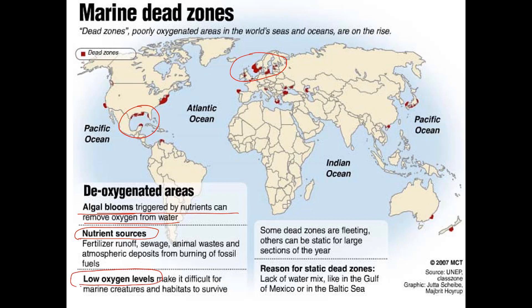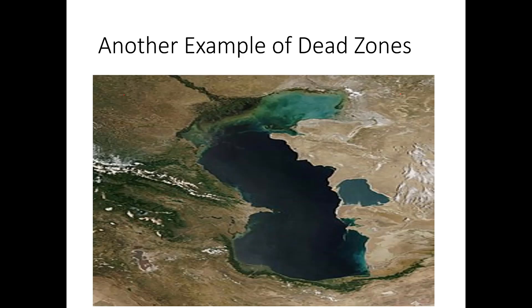Low oxygen levels make it difficult for creatures to survive. Reasons also include lack of water mixing, as seen in the Gulf of Mexico, the Baltic Sea, the Black Sea, and the Caspian Sea. In the Caspian Sea you can actually see the dead zones — they are close to agricultural areas where a lot of NPK is coming in, causing algae bloom, and then bacteria absorbing all the oxygen from the water.